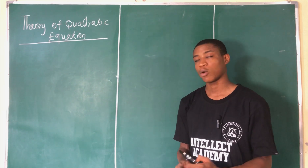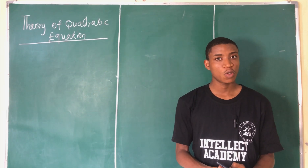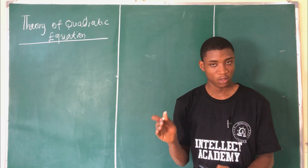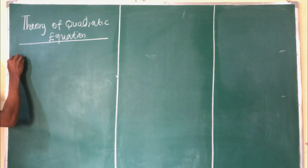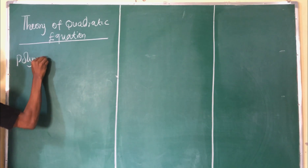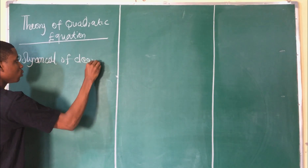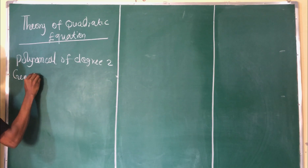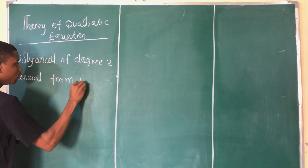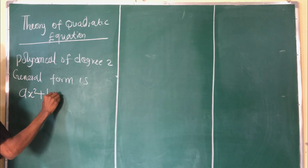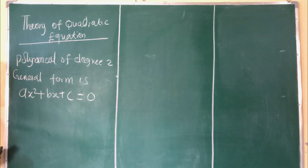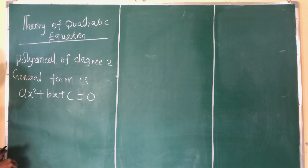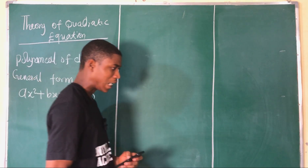Today we are talking about the theory of quadratic equations. A quadratic equation is an equation of degree two — the highest degree is two. It is a polynomial of degree two and its general form is ax² + bx + c = 0. The quadratic equation must be equal to zero. There are cases and types of solutions to the quadratic equation.